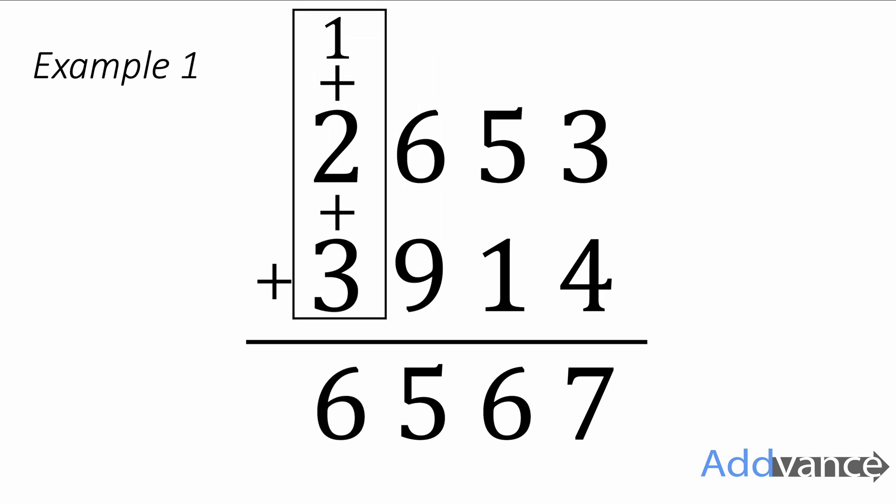So the fifteen you write the five at the bottom and the one you carry over to the next column. One plus two plus three is six. We've got the final answer is six thousand five hundred and sixty seven. That's example one.